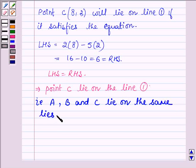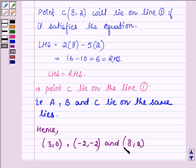and hence the points (3,0), (-2,-2) and (8,2) are collinear.